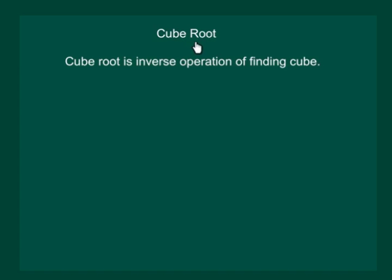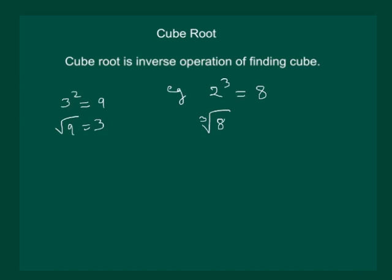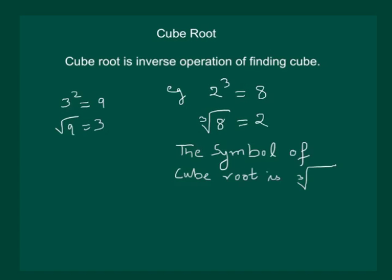Let us try to understand cube root. Cube root is the inverse operation of finding cube. We know that square root is the inverse operation of squaring. If 3 squared is equal to 9, then the square root of 9 is equal to 3. Similarly, we have a cube root operation. For example, if 2 cubed is equal to 8, then the inverse operation gives us that the cube root of 8 is equal to 2. Notice here that the symbol of cube root is this.